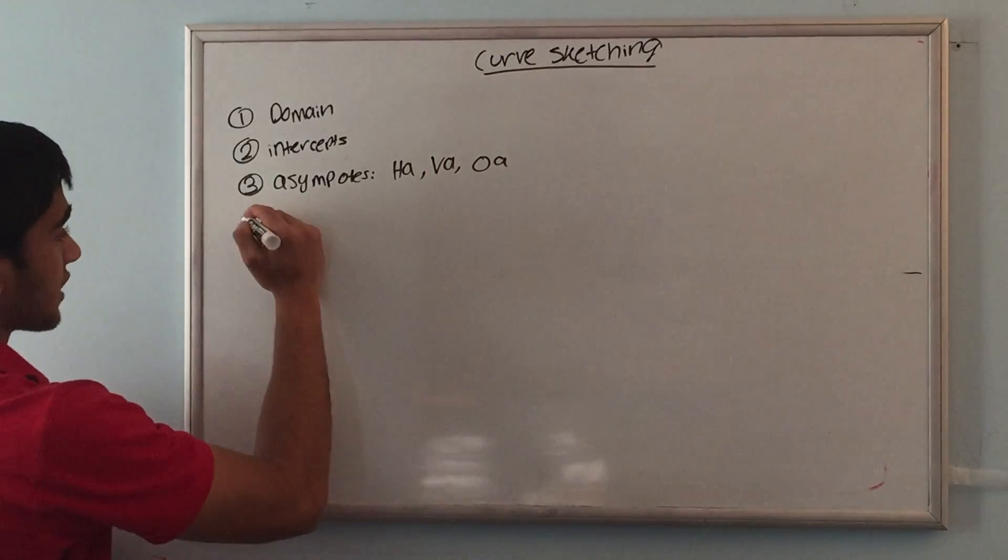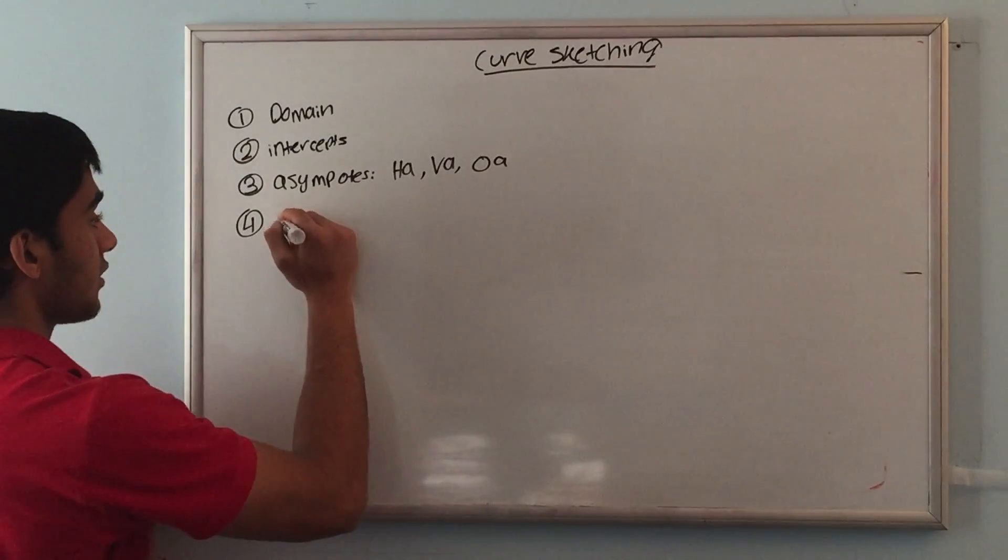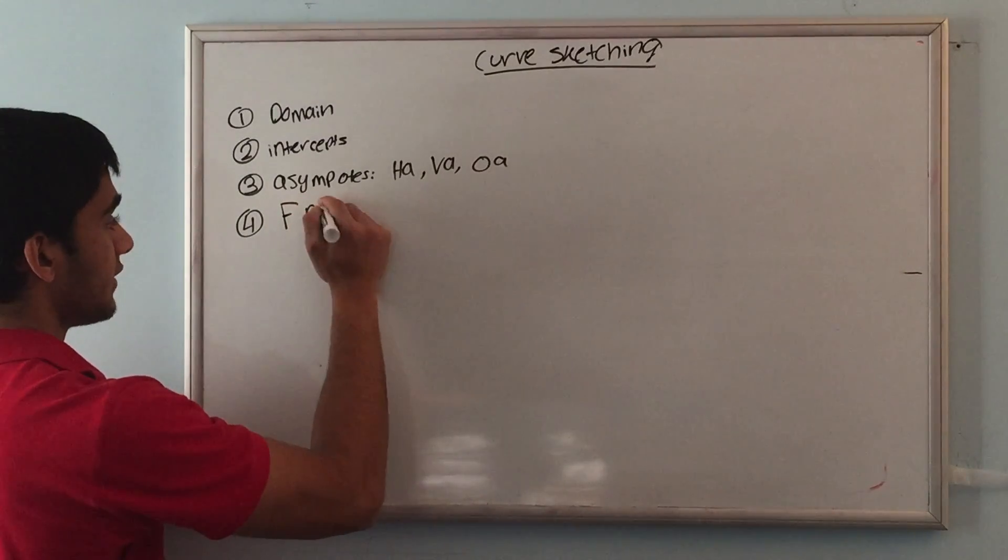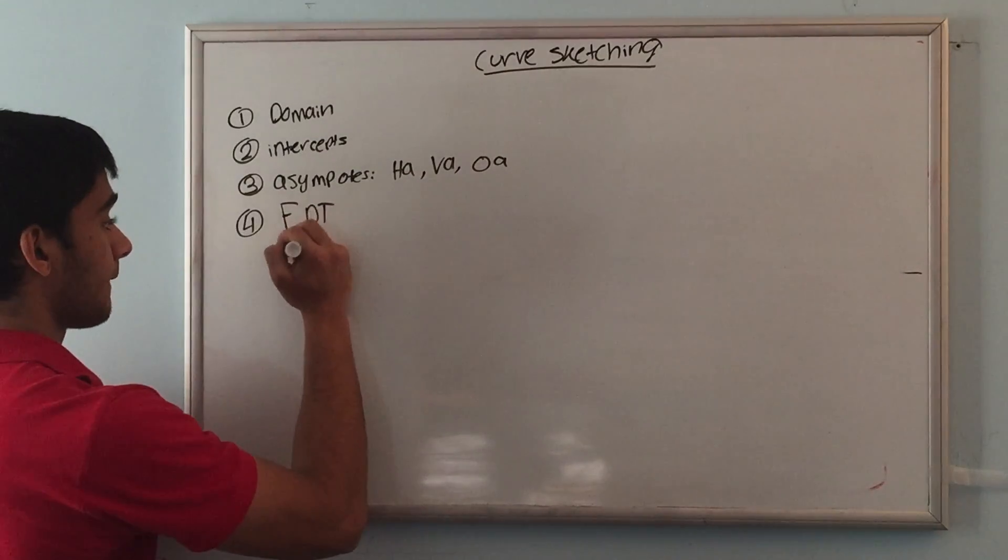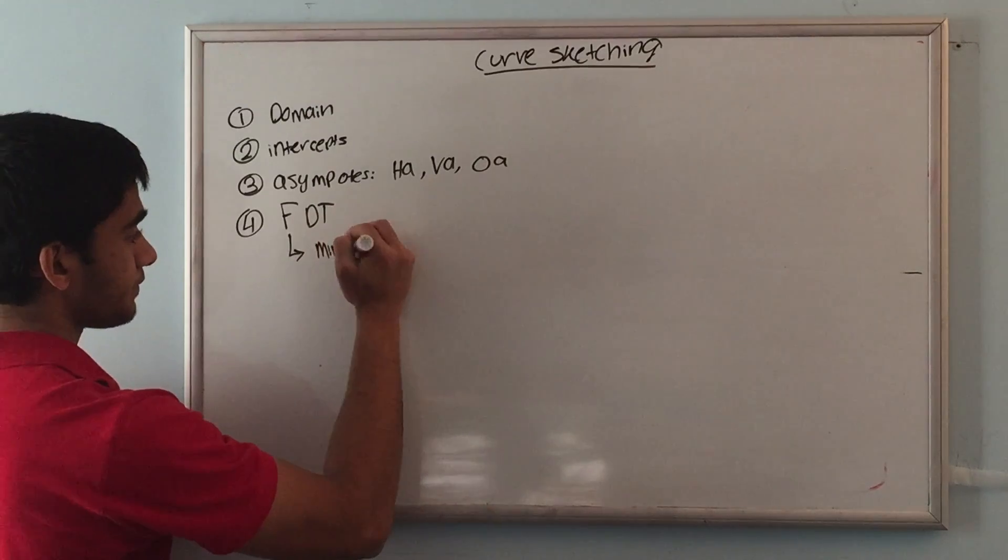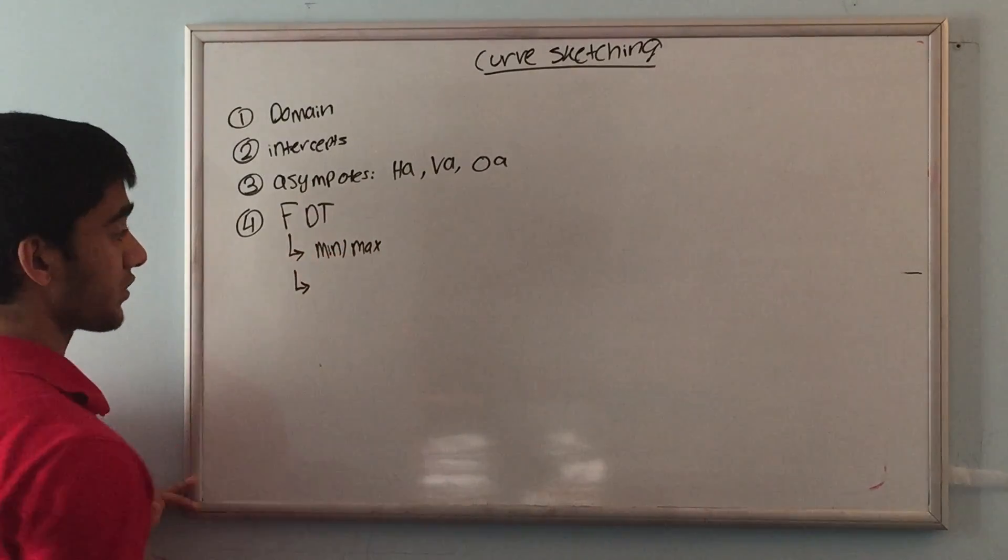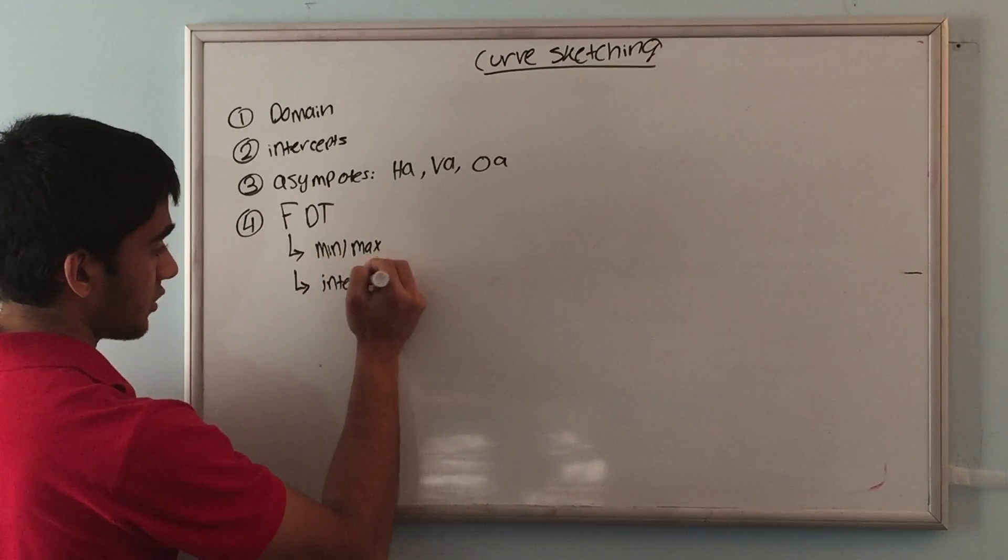The fourth step is where calculus kicks in and I'm going to use the first derivative test. I'll label it as FDT, and within the first derivative test I want to find two things. First I want to find any mins or maxs, and second I want to find the intervals of increase or decrease within the function.